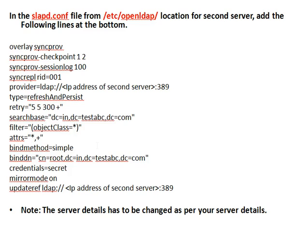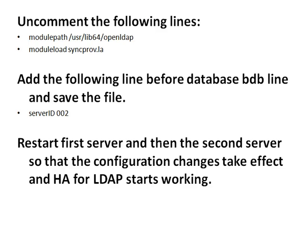Similarly, in the secondary LDAP server, uncomment the module path and module load lines again. For the secondary server, add the line server ID 002 before the database line. Once these changes are done in both the primary and secondary servers, restart the primary server first and then the secondary server so that the high availability configuration takes effect.